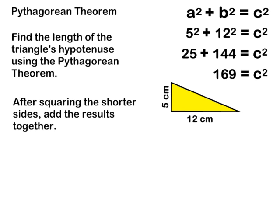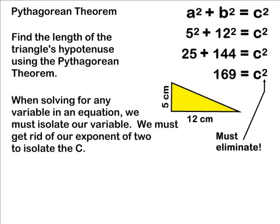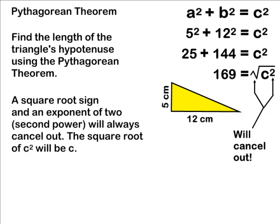Whenever solving for a variable, we must isolate the variable or get it all by itself. And c is not by itself yet. It still has an exponent of 2 attached to it, so we must eliminate that exponent. By writing a square root sign over c to the second power, the exponent of 2 will cancel with the radical sign. That will leave us only with the letter c.